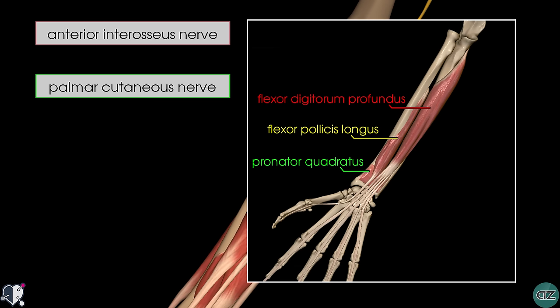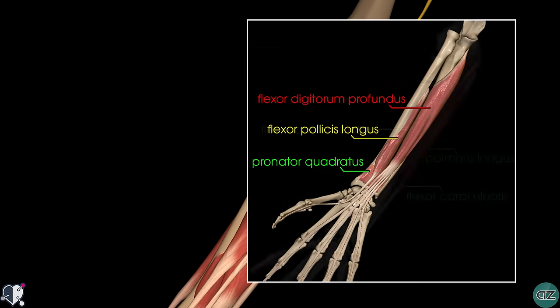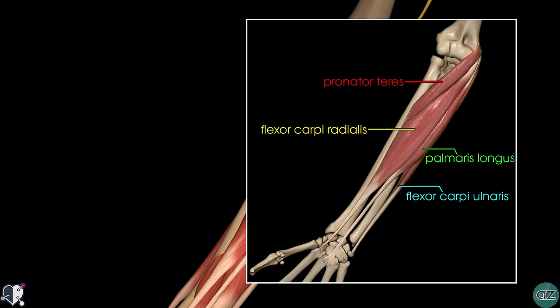The medial half or ulnar half of the flexor digitorum profundus is innervated by the ulnar nerve. The median nerve directly innervates the muscles in the superficial and intermediate layers. In the superficial layer it provides innervation to the pronator teres, the flexor carpi radialis and the palmaris longus. The flexor carpi ulnaris muscle is innervated by the ulnar nerve. So essentially the median nerve supplies all the muscles of the anterior compartment of the forearm except the medial half of the flexor digitorum profundus and the flexor carpi ulnaris, which are innervated by the ulnar nerve.